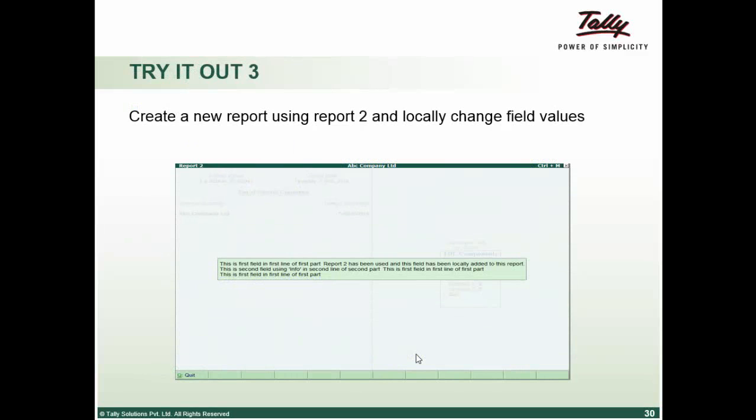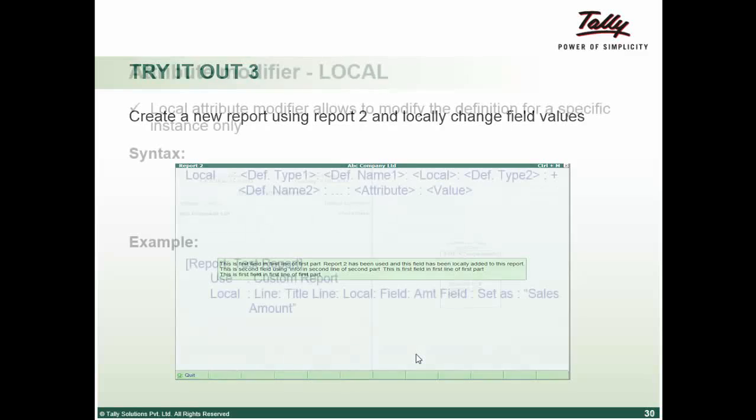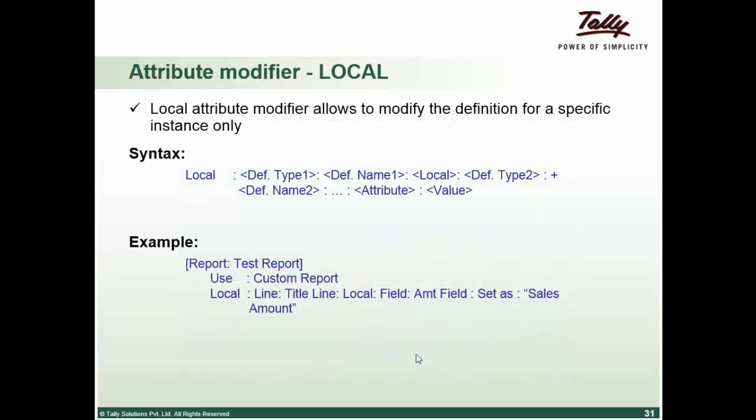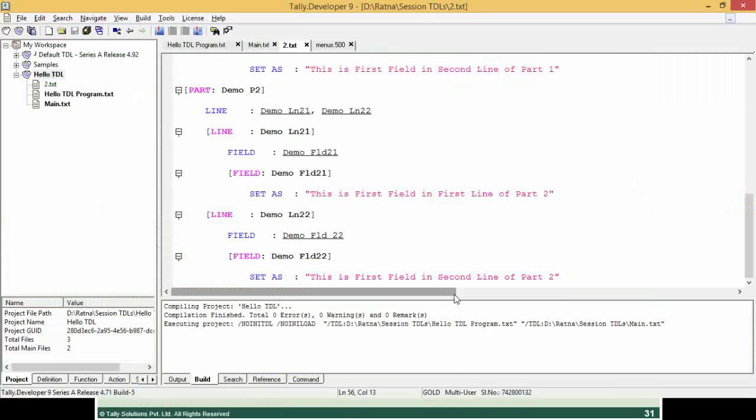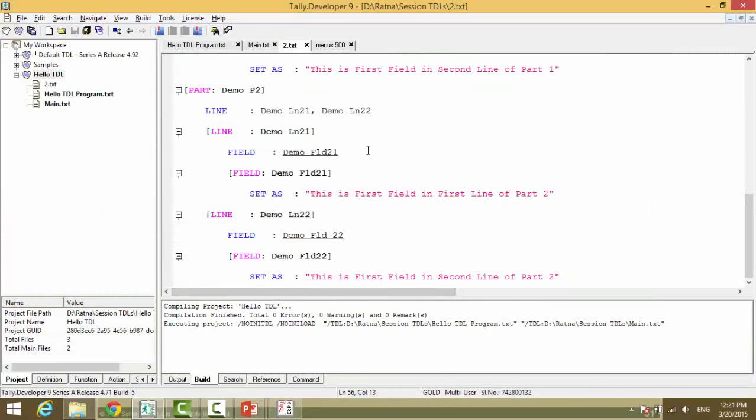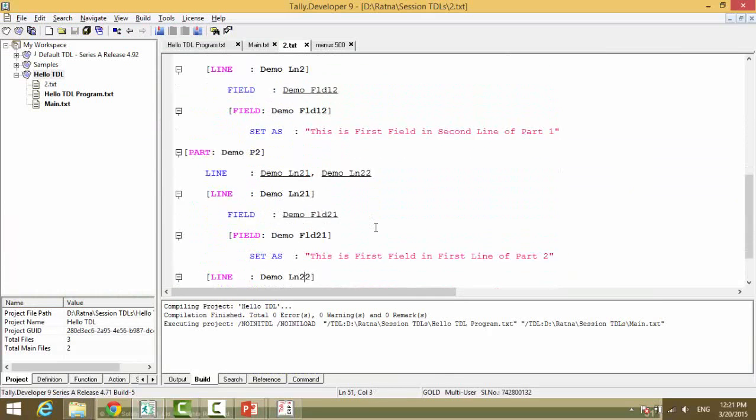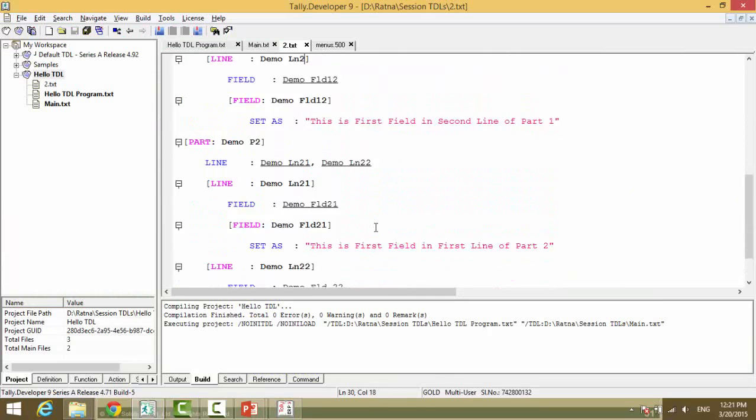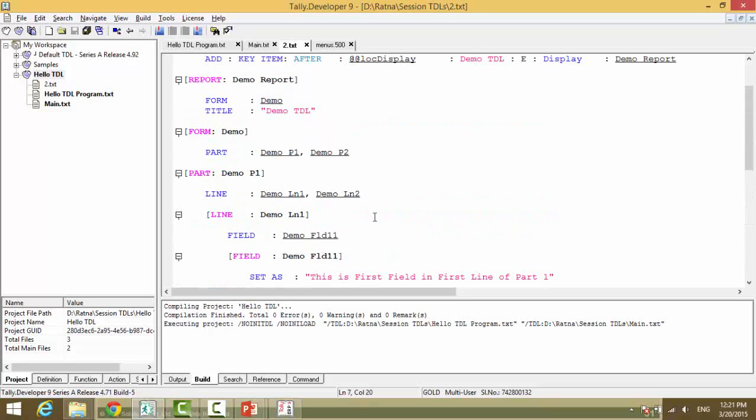You can try this out creating a new report using the report to and locally changing the field values. How to use a local attribute modifier is like this: you can simply say use and you can provide the report name and locally change the field value. Right now for each to the existing report that we have, we have created separate lines and fields. We will add one more part to this.